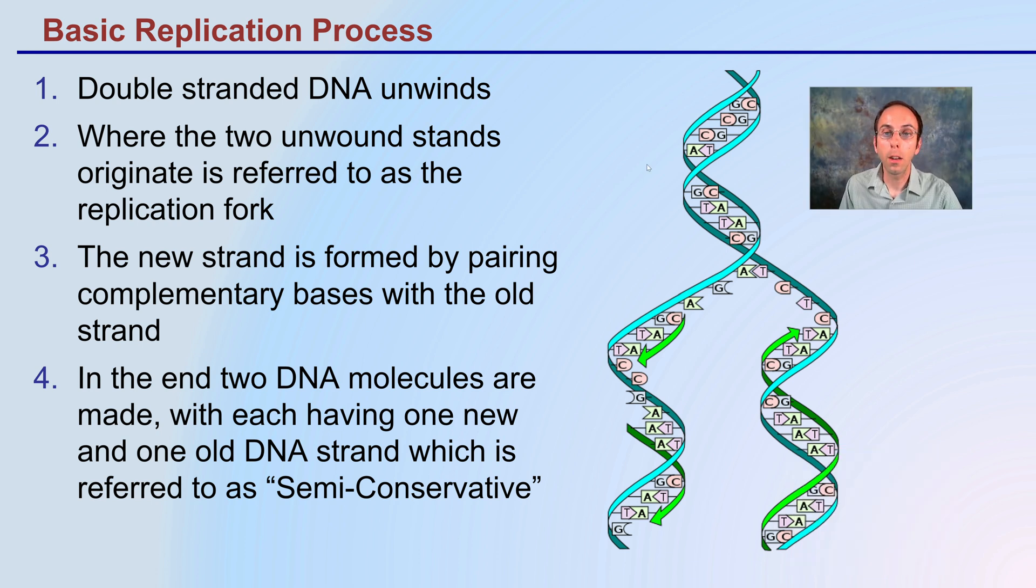DNA is double stranded and it unwinds. There are two unwound strands and there's a replication fork where the two strands are initially divided. These new strands are formed by pairing complementary bases to the old strands. We have that template strand, these complementary bases being bound there to reduce the chance for errors and make this very efficient.